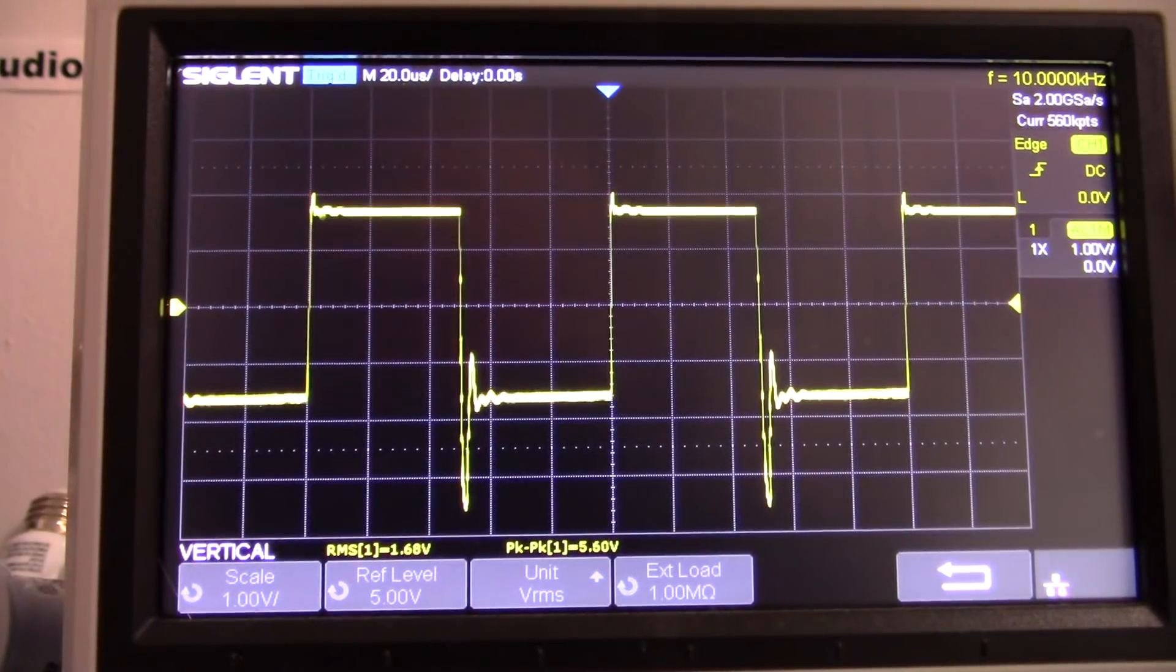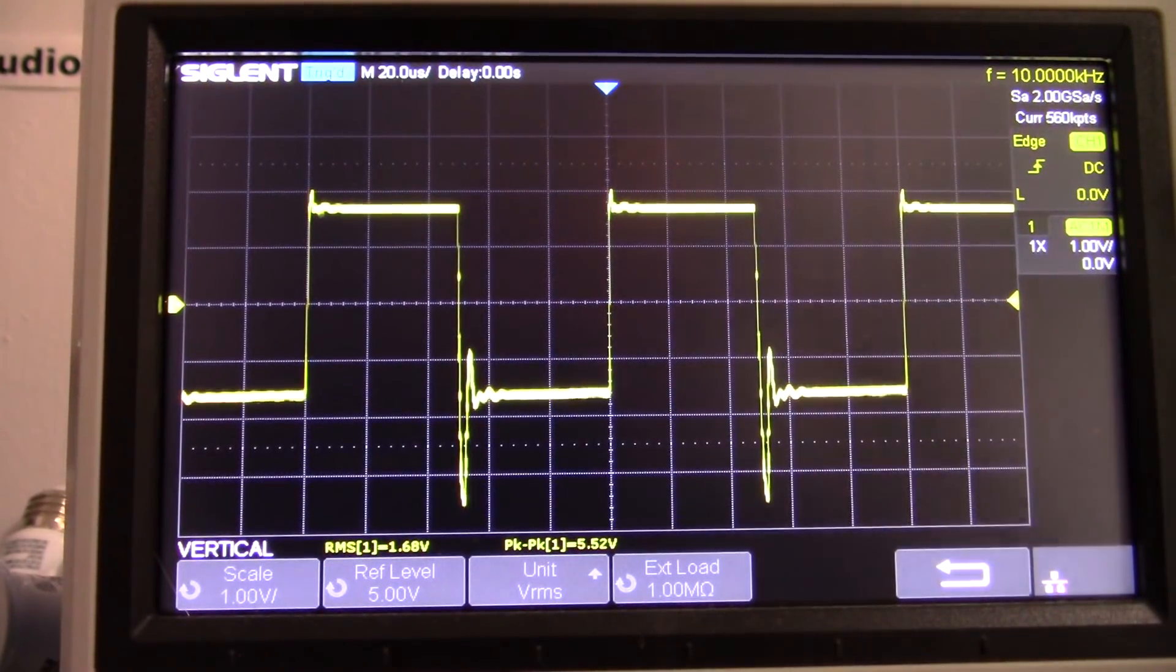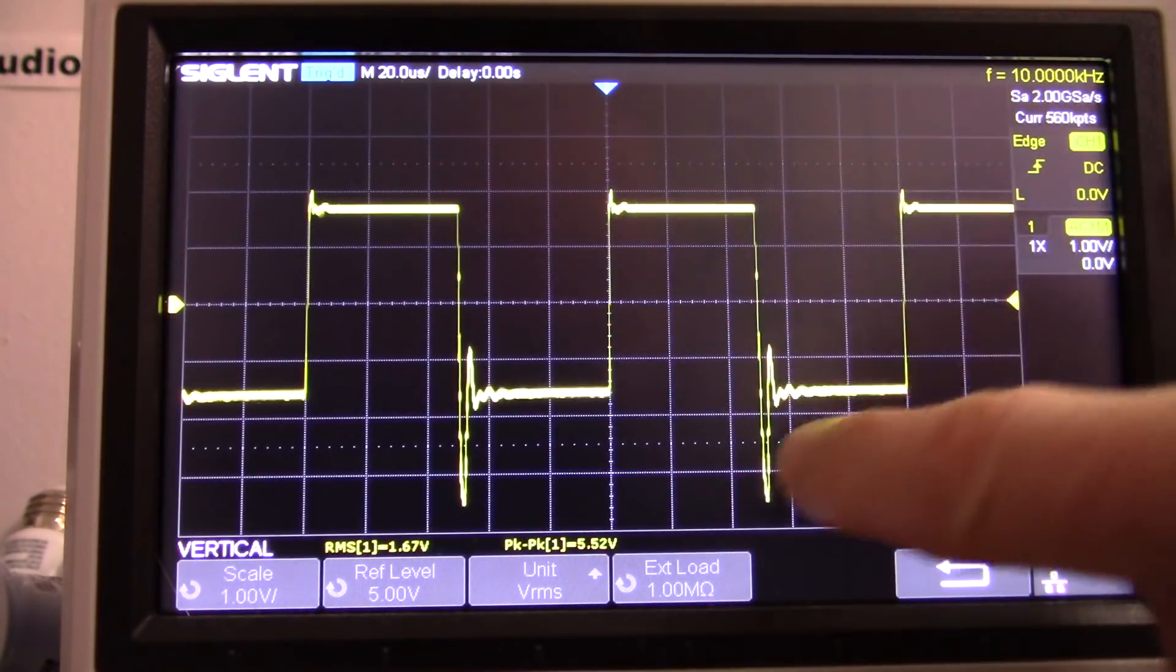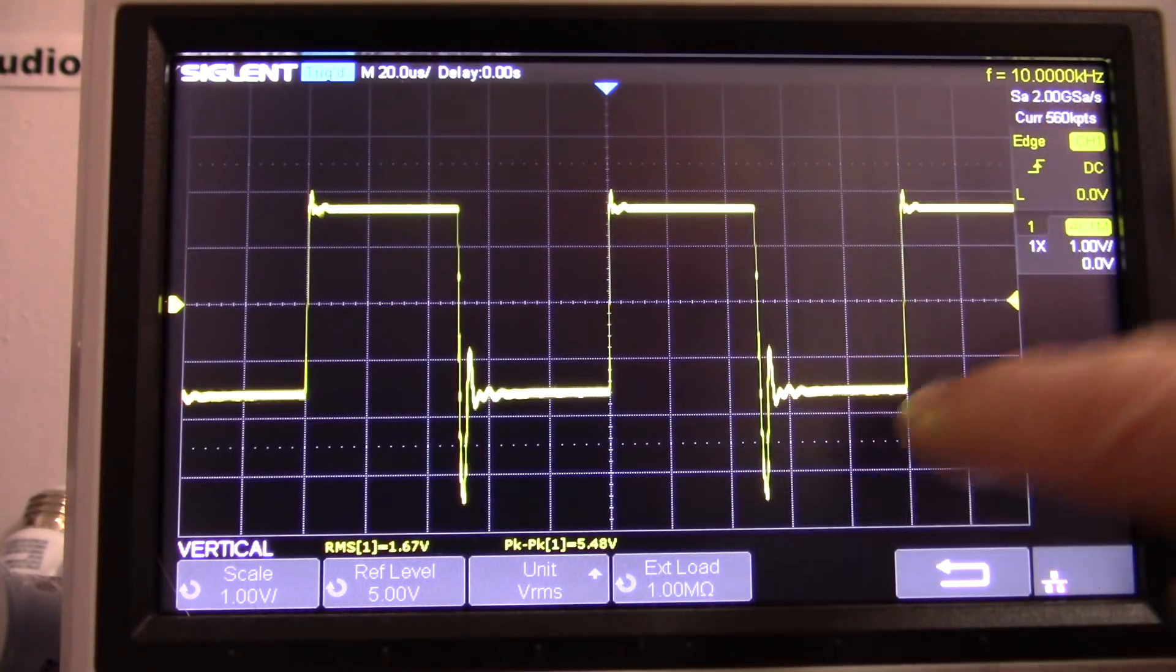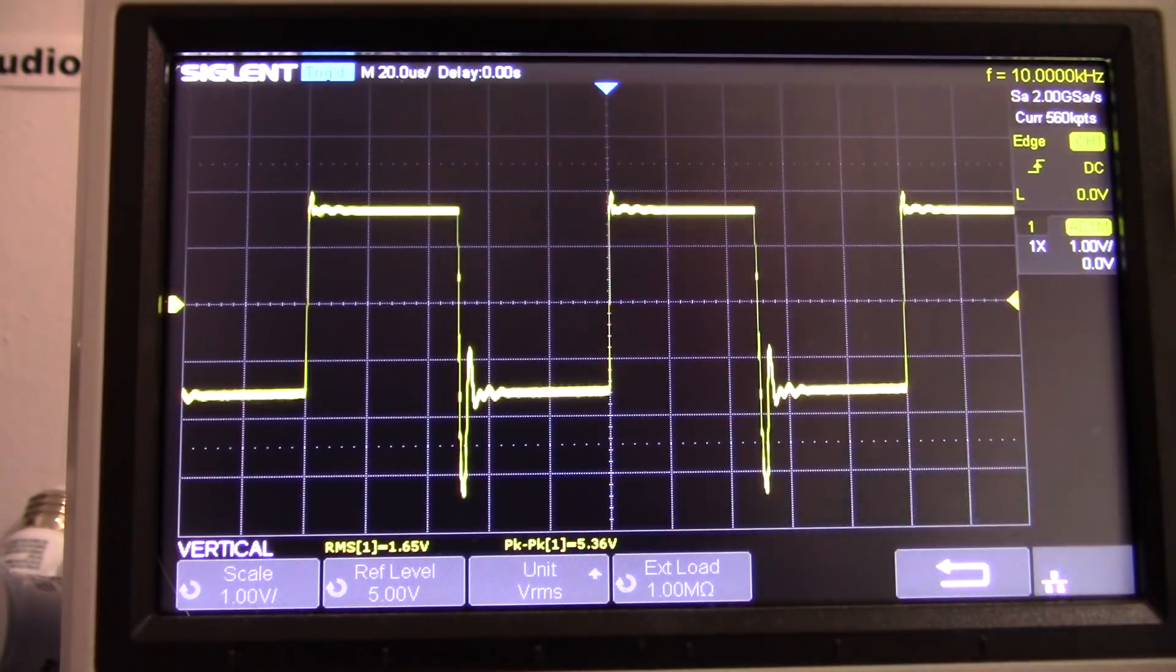Okay. I'm testing the amplifier now with the 10 kilohertz square wave. I want to see what's going on here. And yeah, you can see a pretty strong overshoot and some ringing with the negative side here, the square wave.